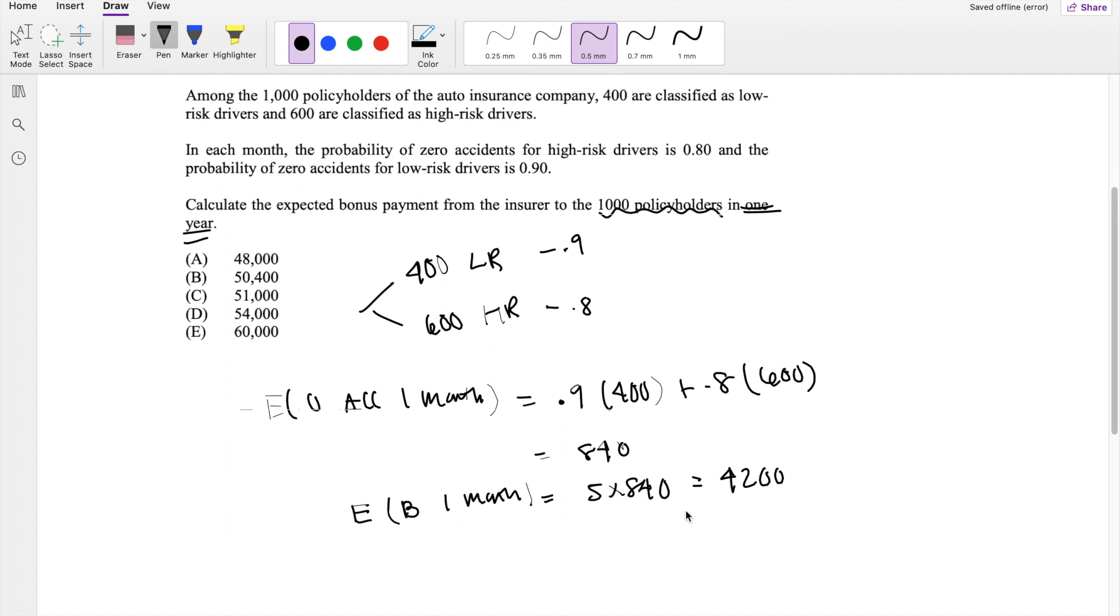Okay, and lastly, if this is how much bonuses they get in one month, how much would it be in one year? Well, there's 12 months in one year, so it's going to be 12 times 4,200, which is equal to 50,400, which is your answer, B.